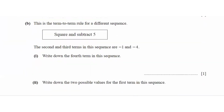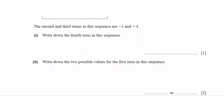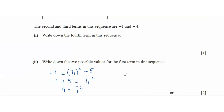The term-to-term rule for a different sequence is square and subtract 5. The second and third terms are negative 1 and negative 4. The fourth term is: (negative 4) squared minus 5, which is 16 minus 5, that is 11. For the first term, use negative 1 equals t₁ squared minus 5, so t₁ squared equals 4, and the square root of 4 gives two values: plus or minus 2. So the first term can be either positive 2 or negative 2.